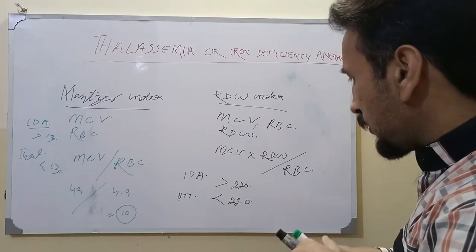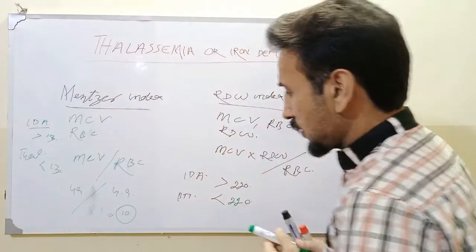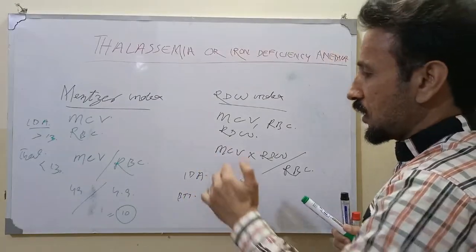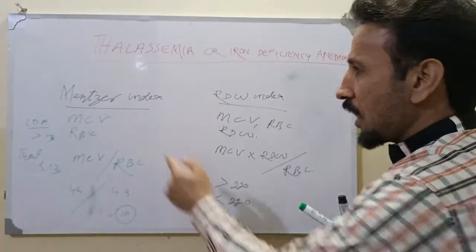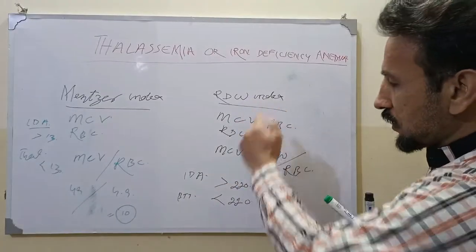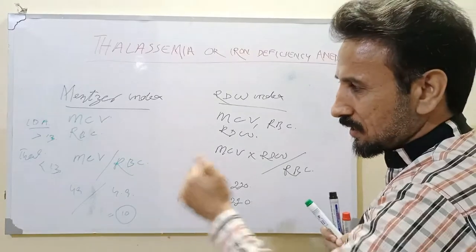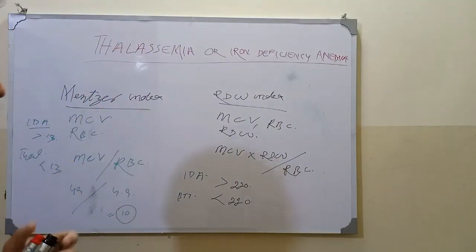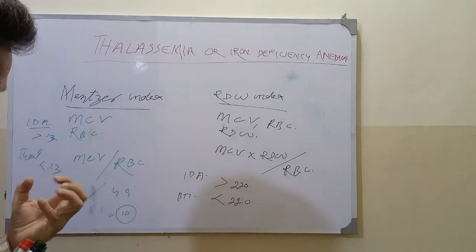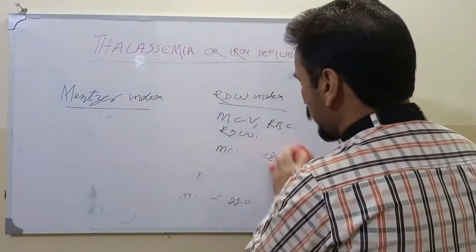This is important because the formula is almost similar to the Mentzer Index with the addition of RDW. Iron deficiency anemia has an increased Mentzer Index of more than 13 and an increased Red Cell Distribution Width Index of more than 220, while in beta thalassemia both values are less than these thresholds. By looking at the blood CP, you can readily determine whether the patient is suffering from thalassemia or iron deficiency anemia.